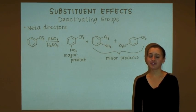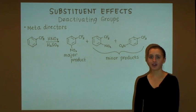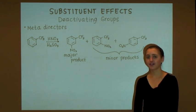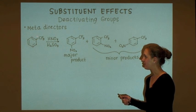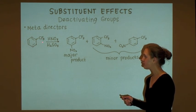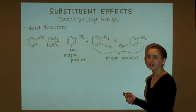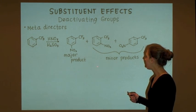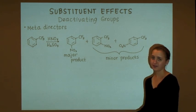In the previous example, the starting material lacked pre-existing substituents. Now let's look at electrophilic aromatic substitution on an aromatic compound that contains a pre-installed substituent. In this case, trifluoromethylbenzene undergoes nitration to produce the major product, which is the meta-substituted isomer, and the minor products, which are the ortho and para-substituted isomers.